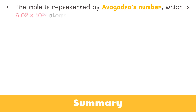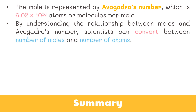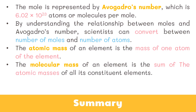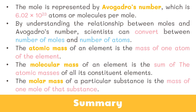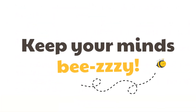Here's a quick recap: the mole is represented by Avogadro's number, which is 6.02 × 10²³ atoms or molecules per mole. By understanding the relationship between moles and Avogadro's number, scientists can convert between number of moles and number of atoms. The atomic mass of an element is the mass of one atom; the molecular mass is the sum of atomic masses of all constituent elements; and the molar mass is the mass of one mole of a substance. We will discuss percentage composition of a compound in our next video.